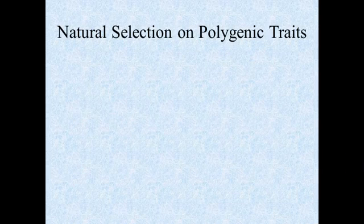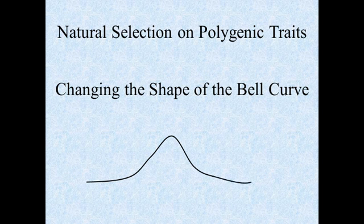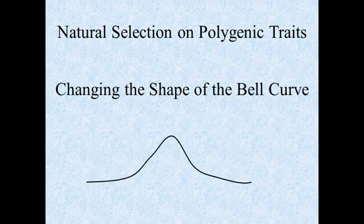Hi everybody and welcome to the latest vodcast from Honors Biology at Desert Ridge High School. I'm Mr. Galladay and today we're going to be looking at natural selection — specifically the types of natural selection that occur on polygenic traits. One way to think about this is that these are ways natural selection can change the shape of the bell curve. This is a good point to update the organization of your notebook.